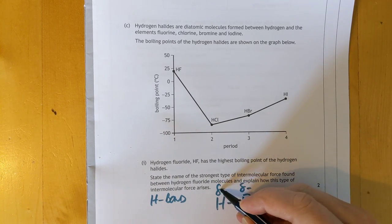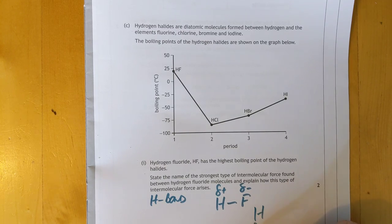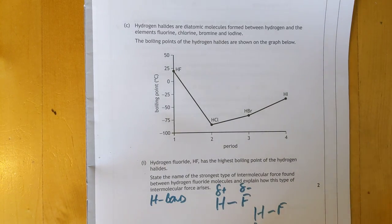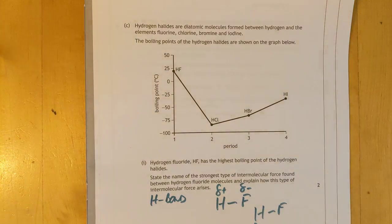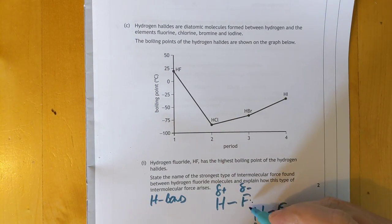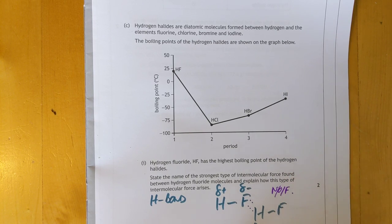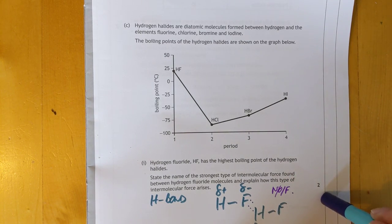Hydrogen fluoride has the highest boiling point due to the strongest type of intermolecular force found. Well, that's hydrogen bonding, obviously. How does this force arise? I wonder what detail they're looking for. It's an extreme version of dipole-dipole interaction, effectively. I'd probably draw a diagram. This is delta minus, this is delta plus in one molecule. This is delta plus in the neighbouring molecule. Those are your hydrogen bonds.